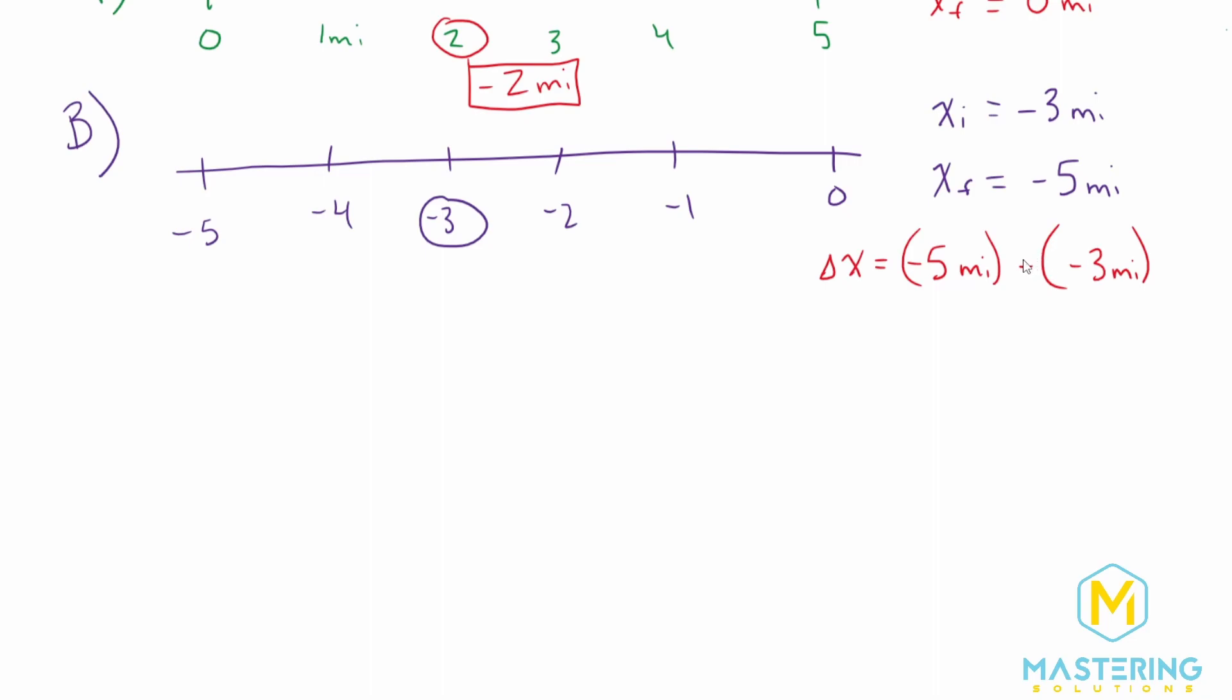Now obviously, whenever you minus a negative, it's the same as adding. So her delta x for part B will be a negative two miles. Delta x equals negative two miles.